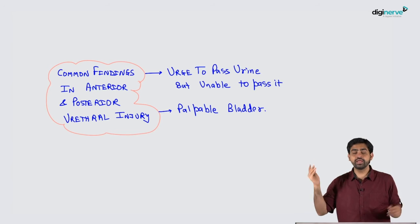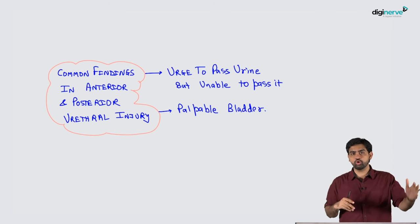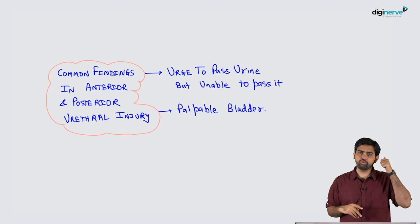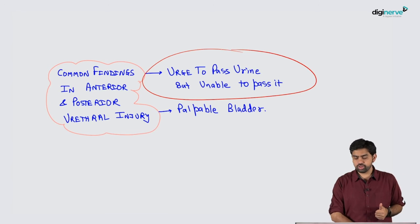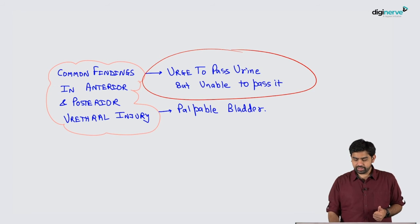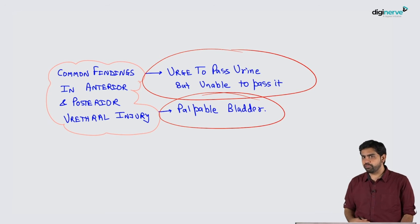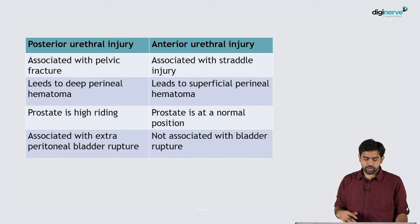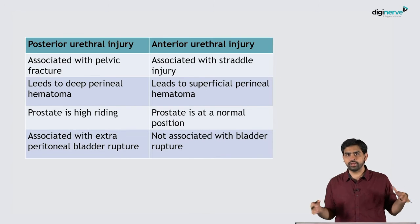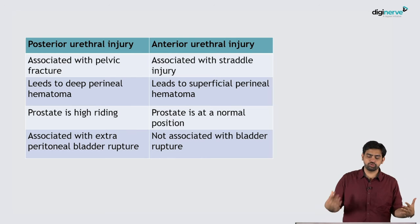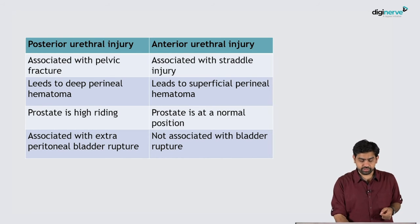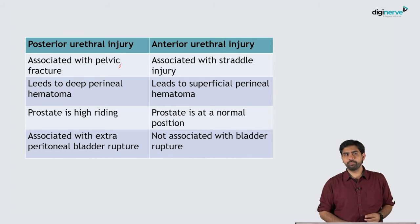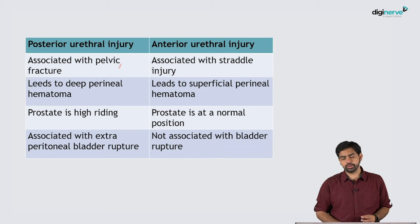Common findings in both anterior and posterior urethral injury include: a severe urge to pass urine but inability to do so — because the urethra is disrupted — and a palpable bladder on examination. Now, the distinguishing findings: posterior urethral injury is usually associated with a pelvic fracture.